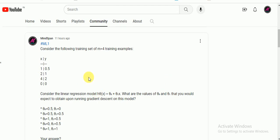So this was the question asked in group. The question is consider the following training set of m equals 4 training examples. So it is given that you have 4 training examples.